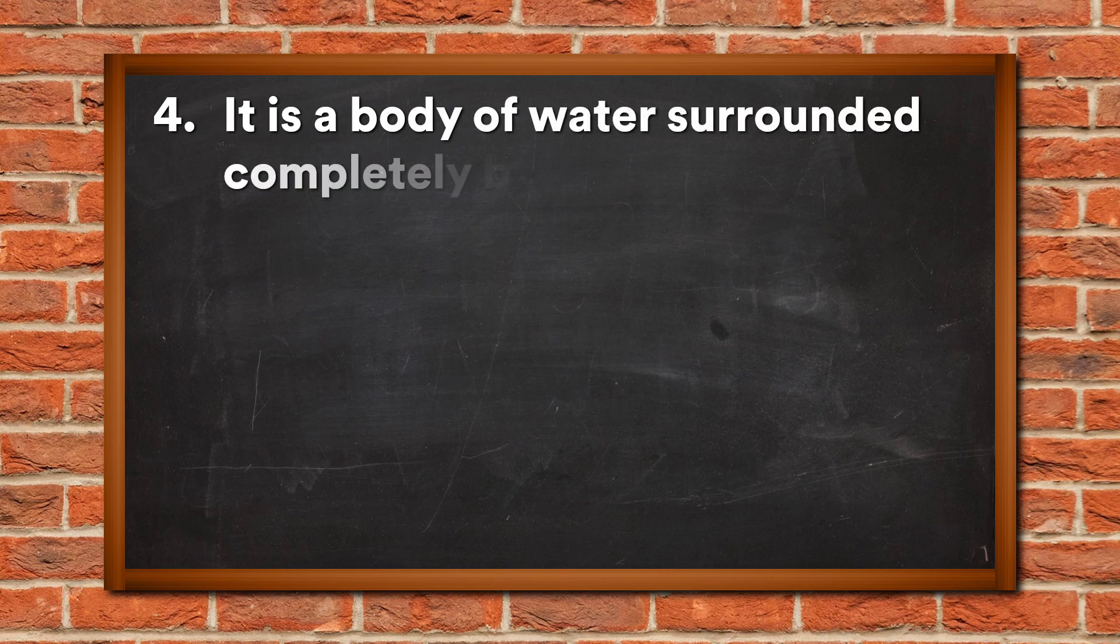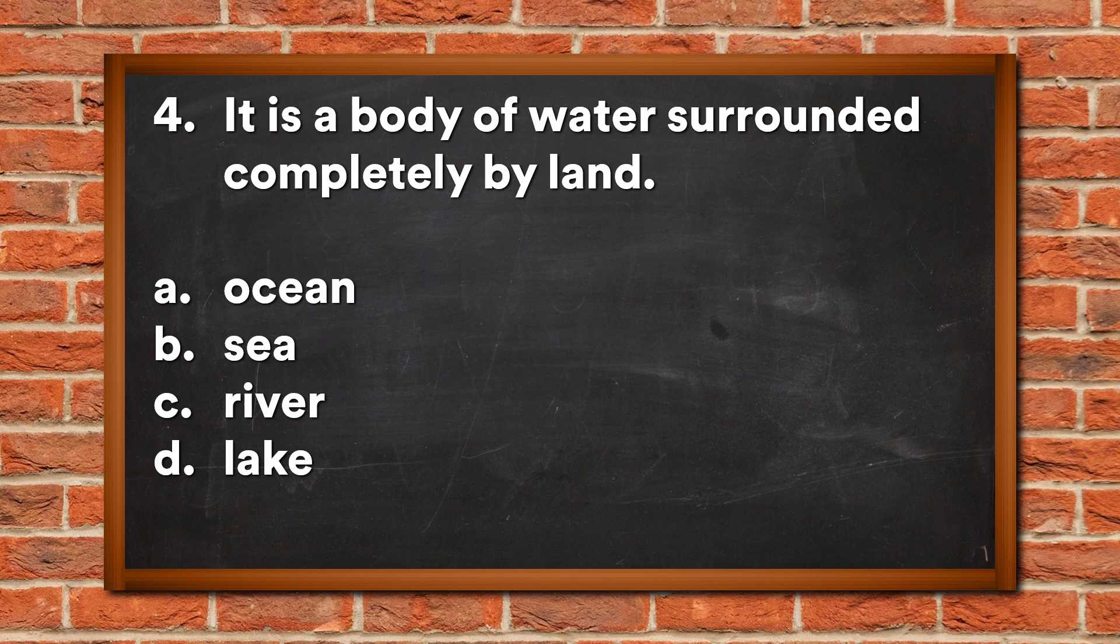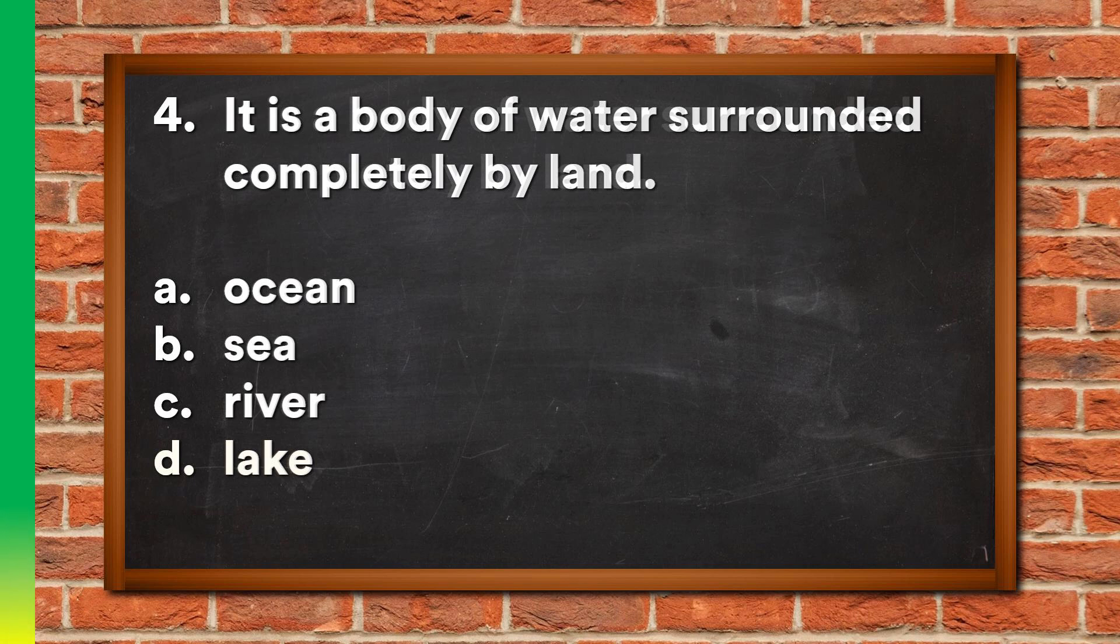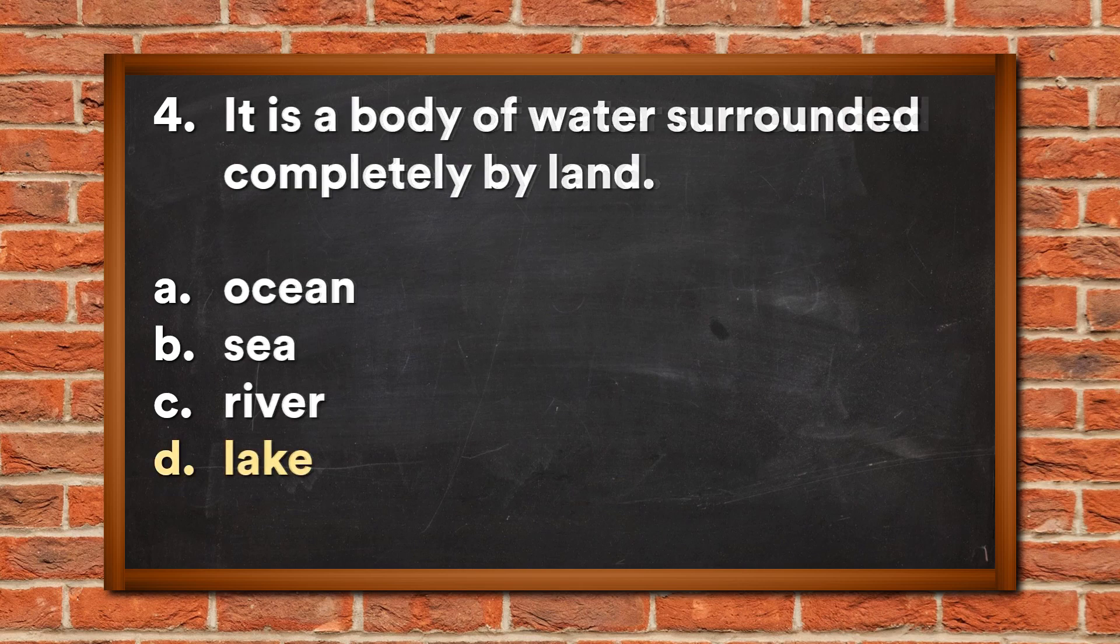Question 4: It is a body of water surrounded completely by land. A. Ocean, B. Sea, C. River, D. Lake. The answer is D, Lake.